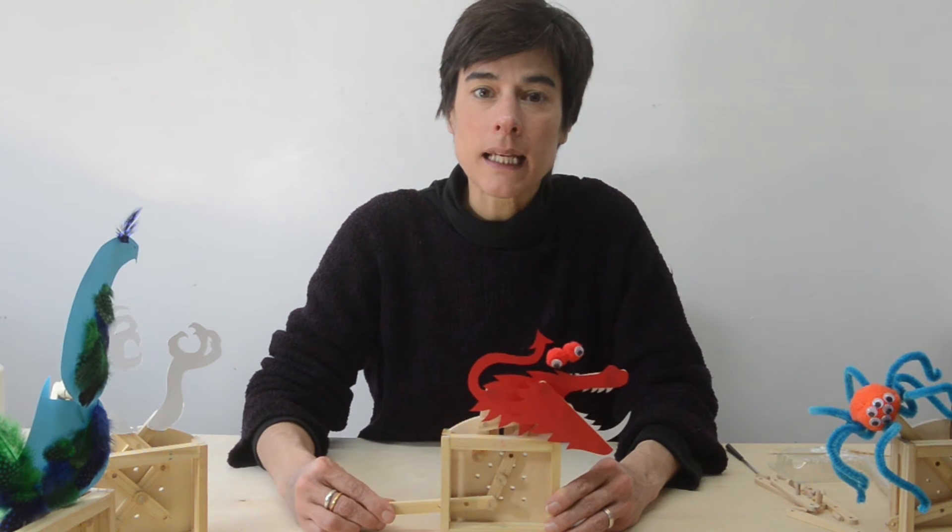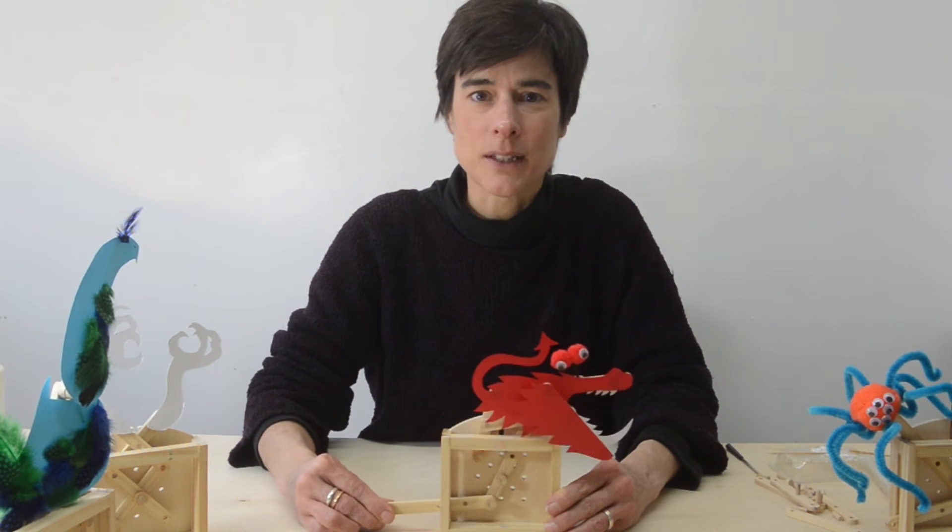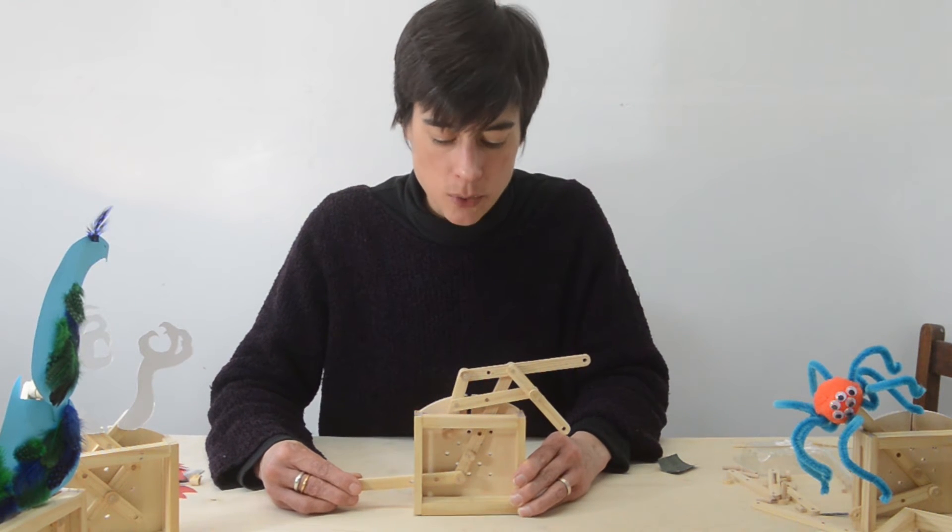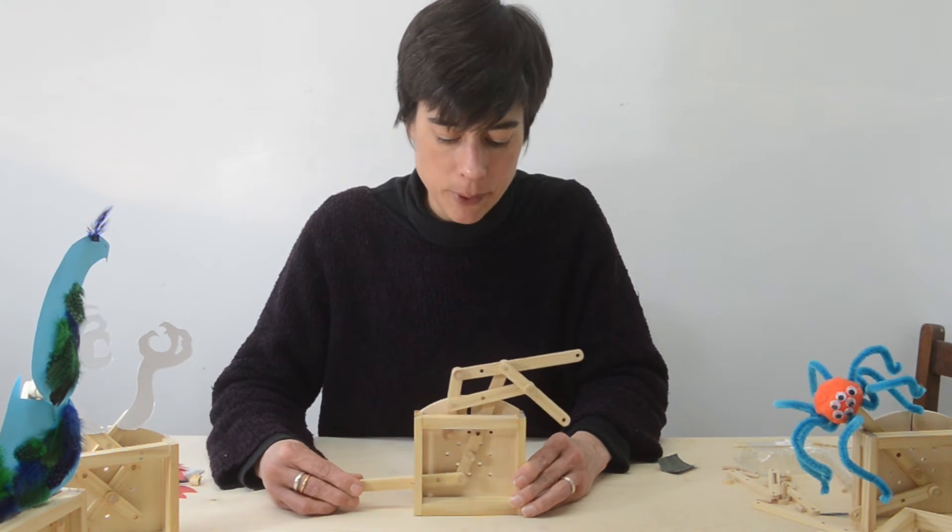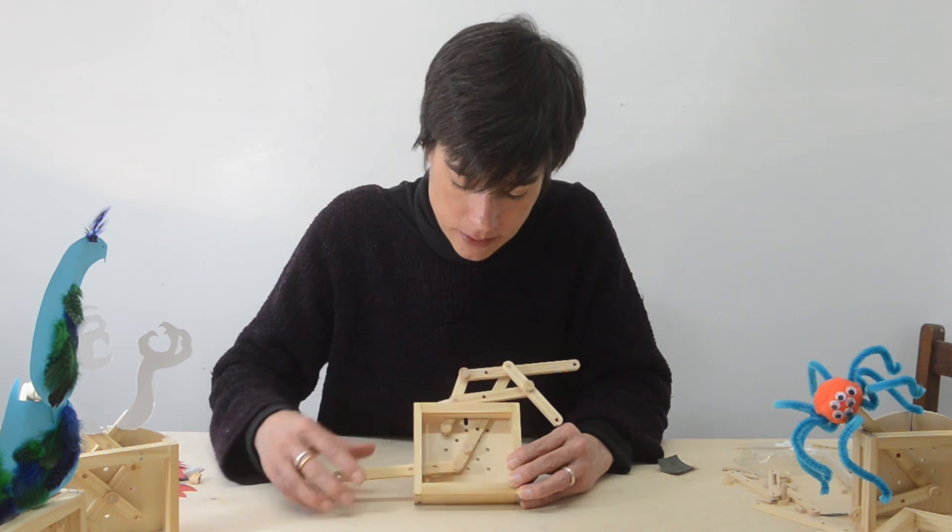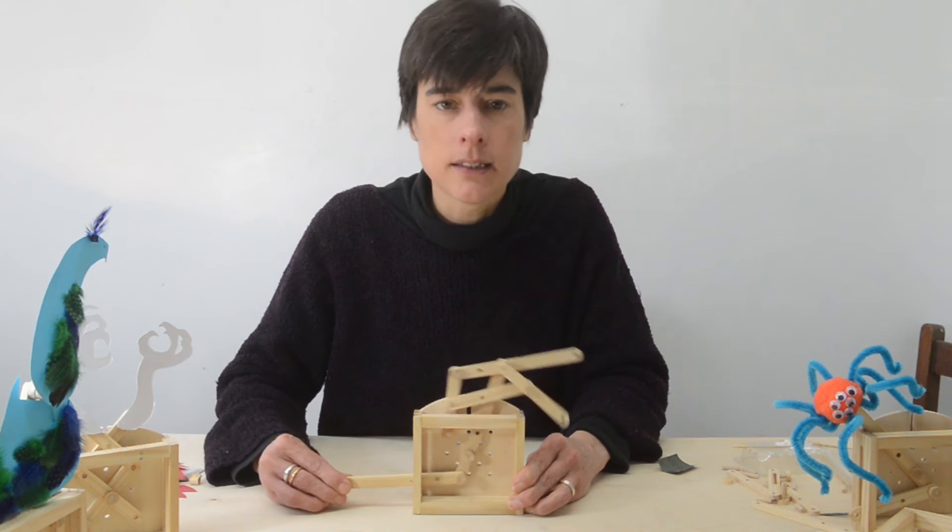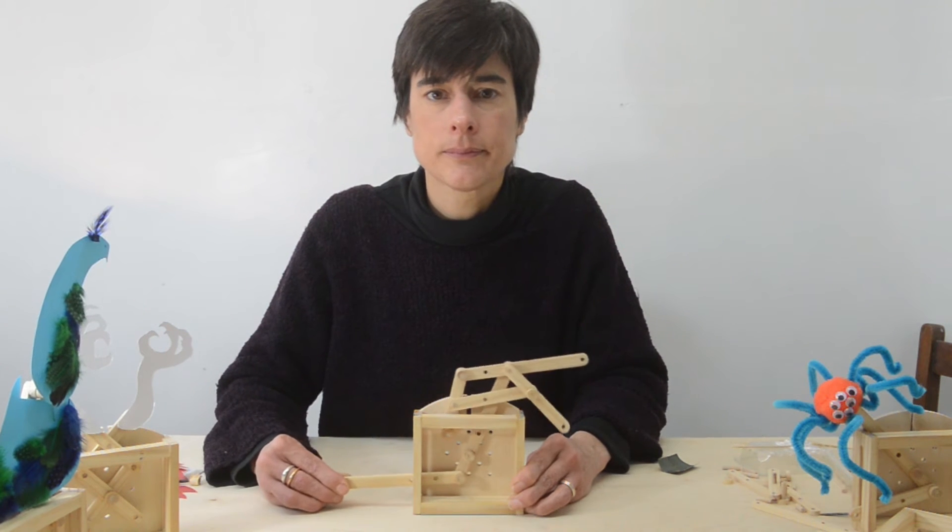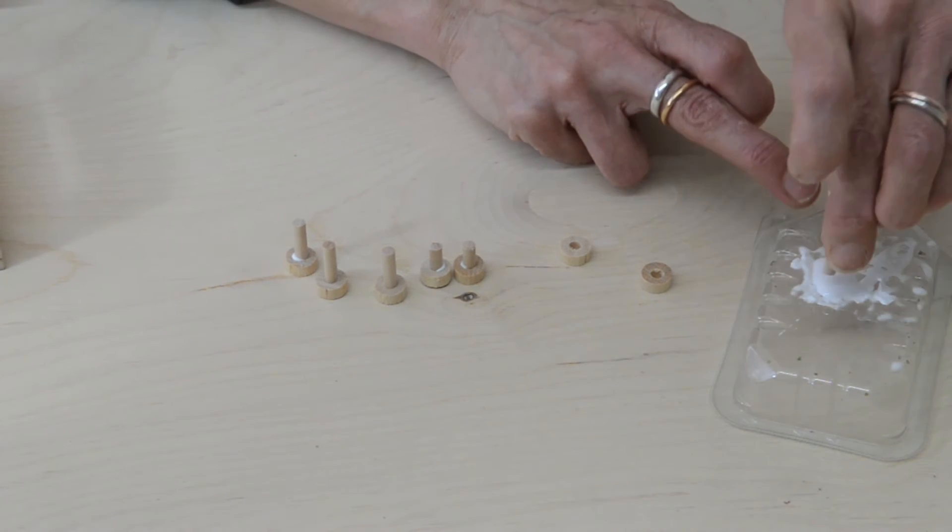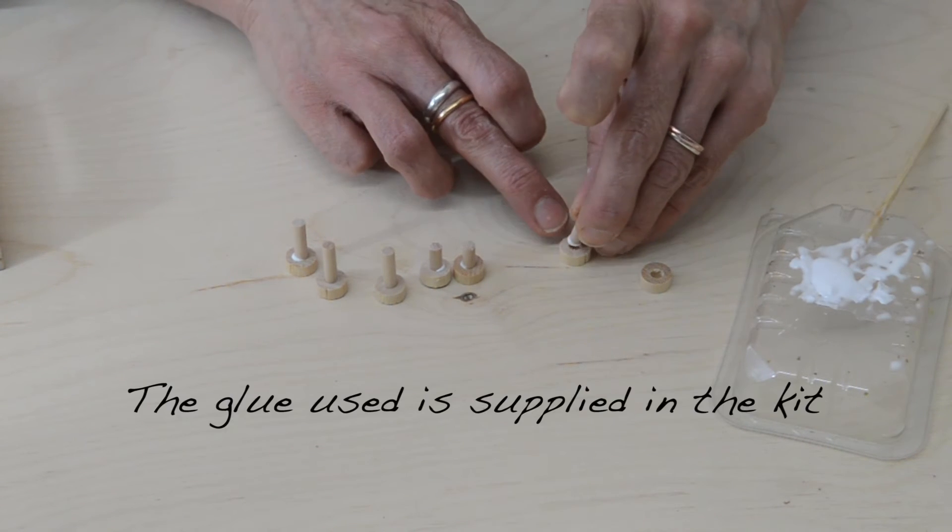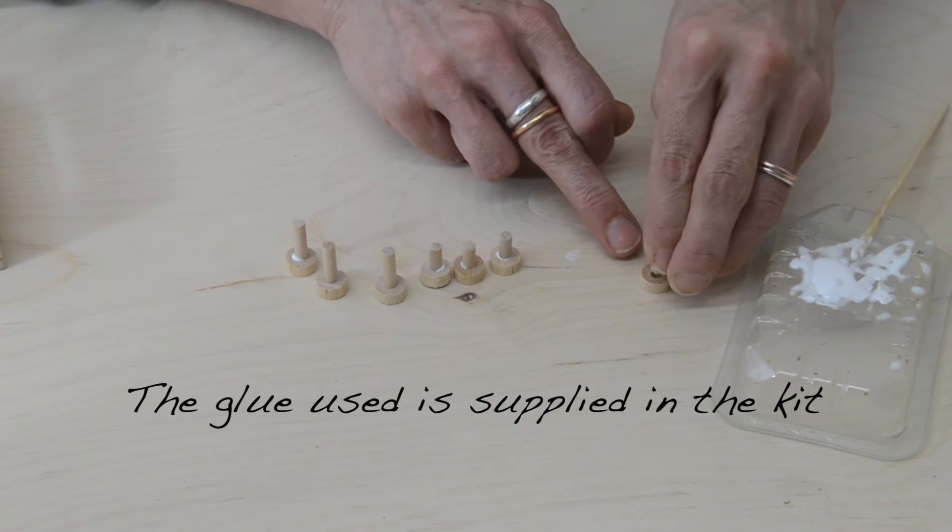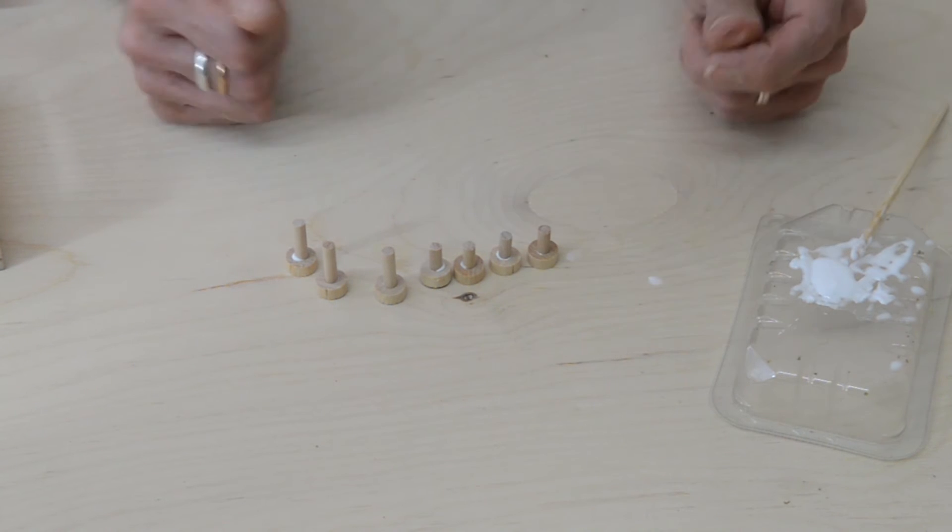Let's make the snapping dragon as an example. So here is the dragon's structure without the body shapes superimposed on top. There are two fixed pivot points in the backboard and the rest are all moving. So first of all we're going to pre-glue these little pegs. I've already done some here and we'll just do these last two and then leave them to dry.